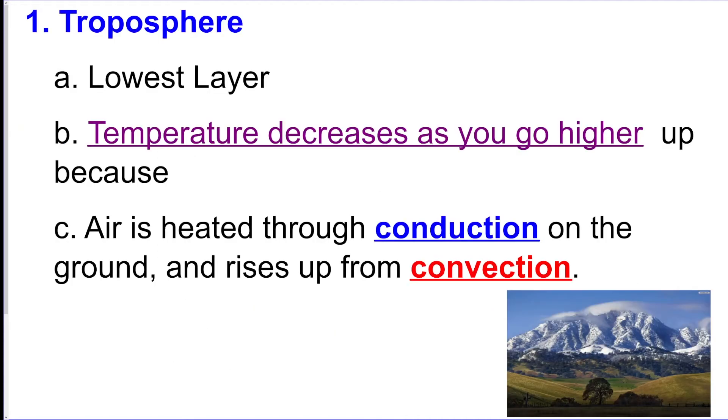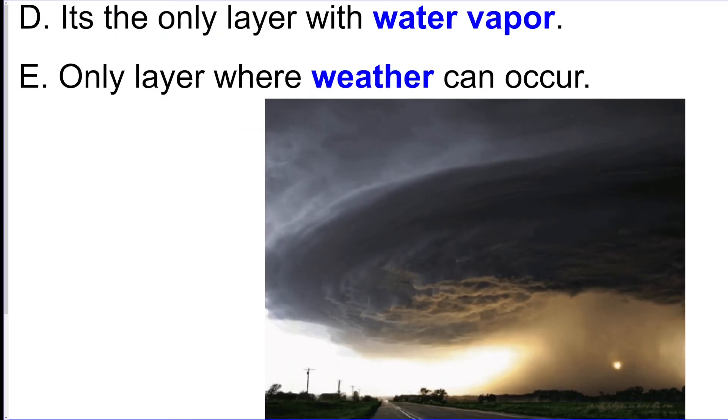Just a couple of facts about each one. The troposphere is the lowest layer. The temperature decreases as you go higher up, like when you climb a mountain there's snow at the top of the mountain. Air is heated through conduction on the ground and then it rises up through the air through convection currents. It's the only layer with water and this is where most of our weather is going to be.